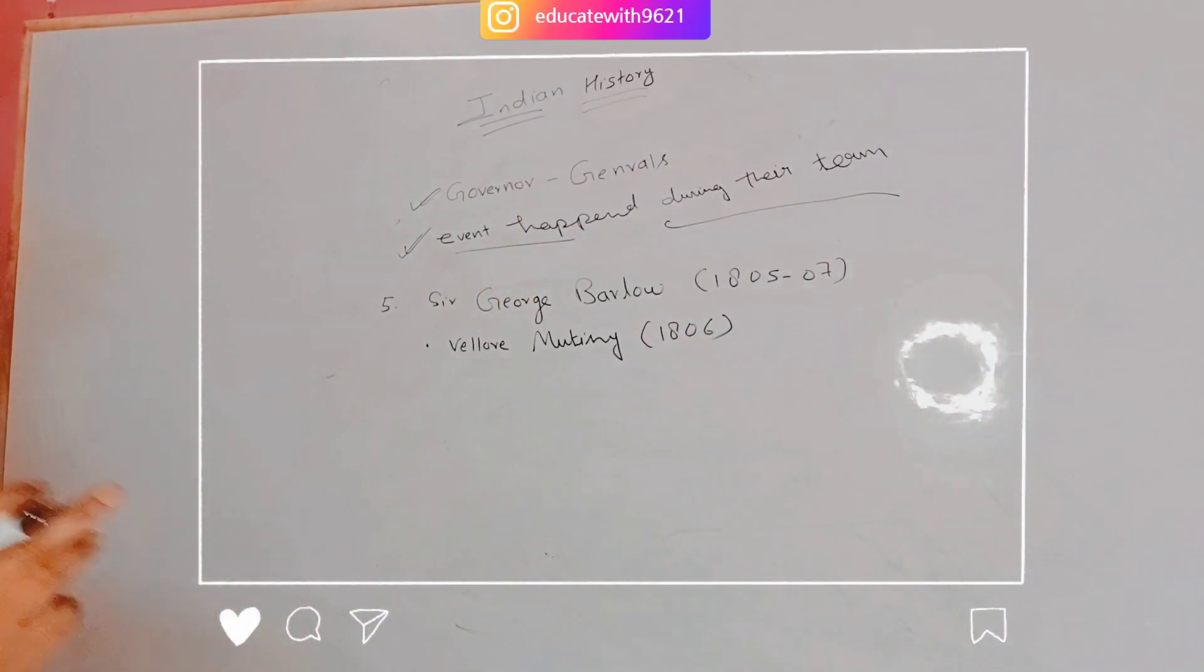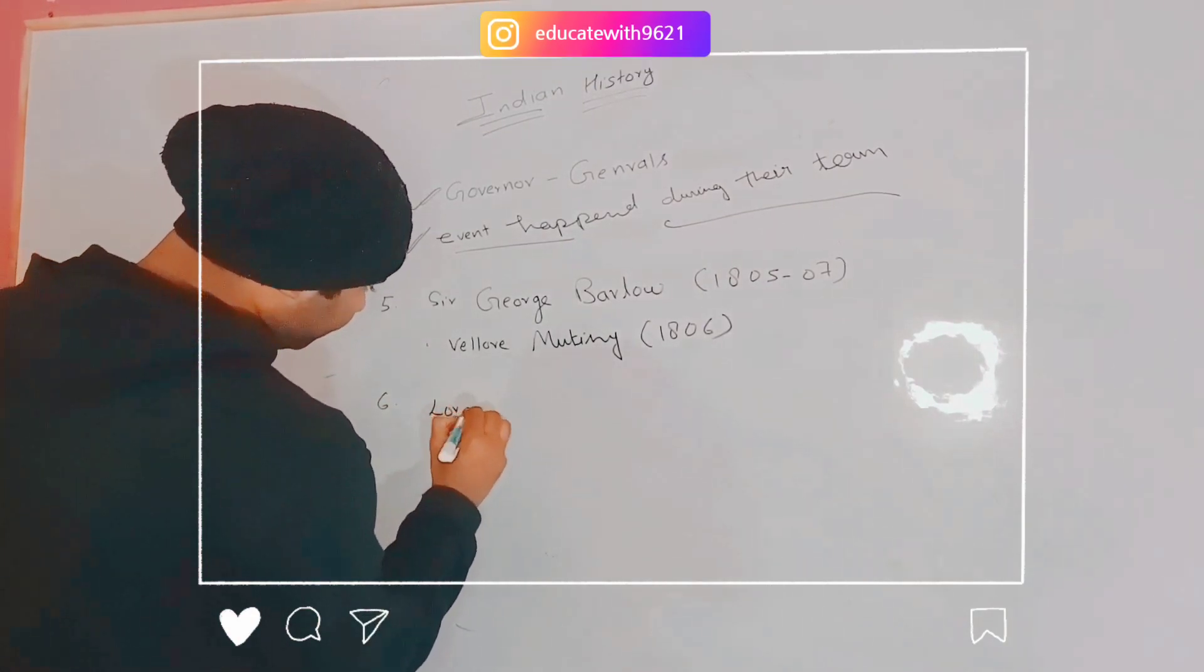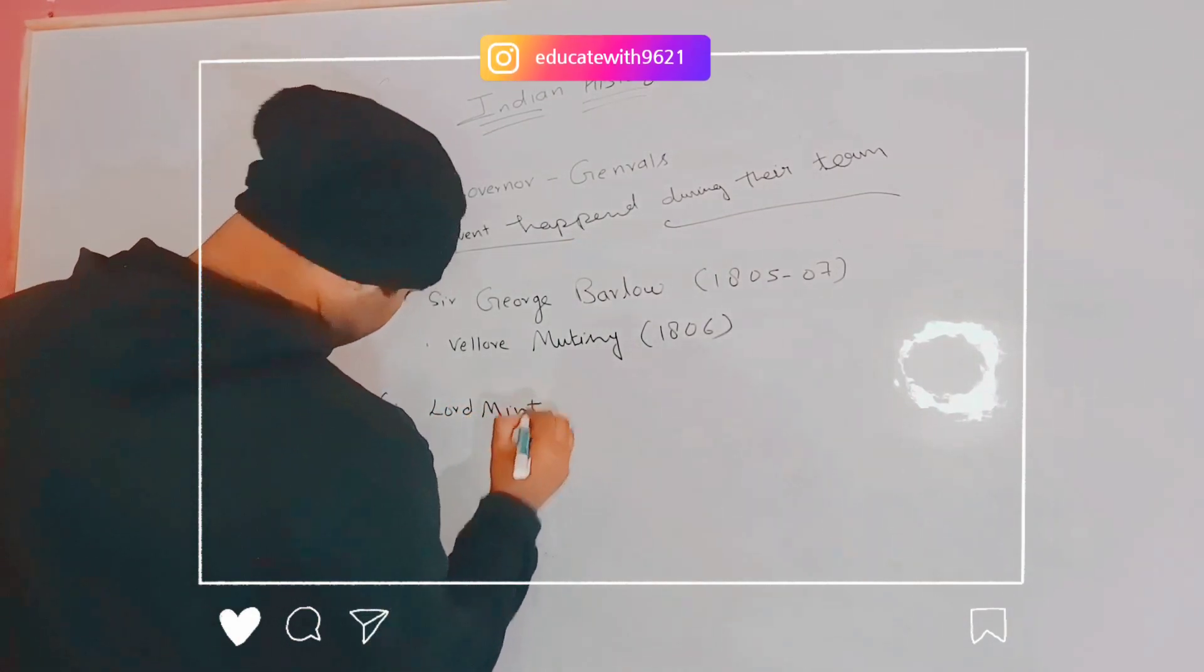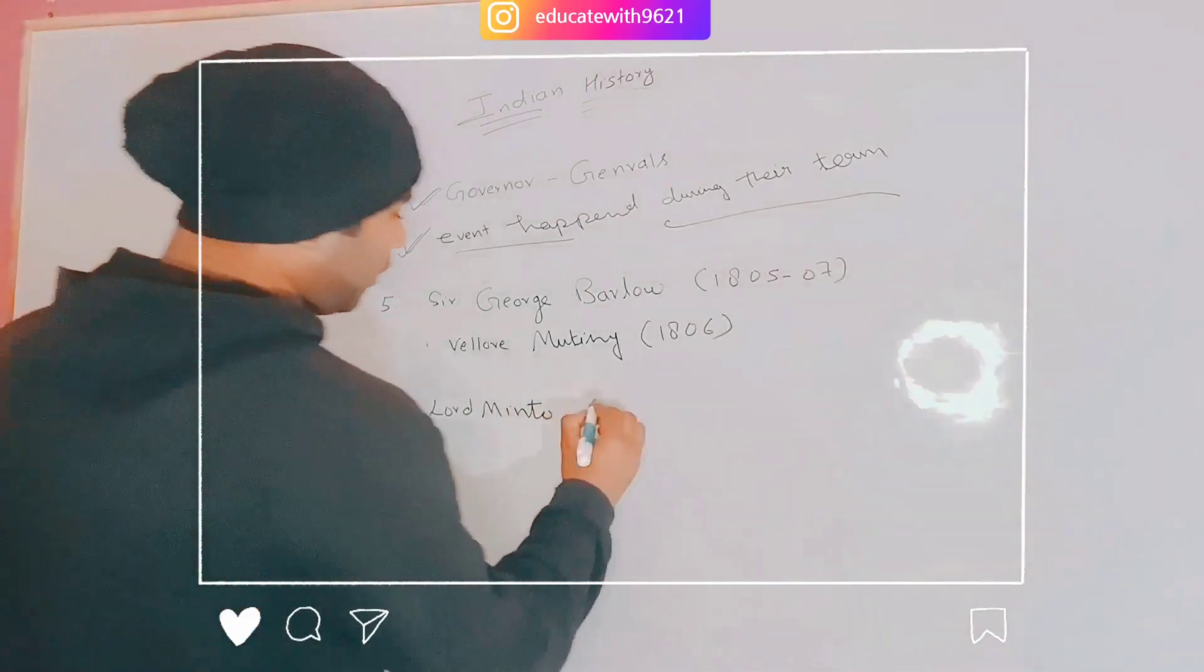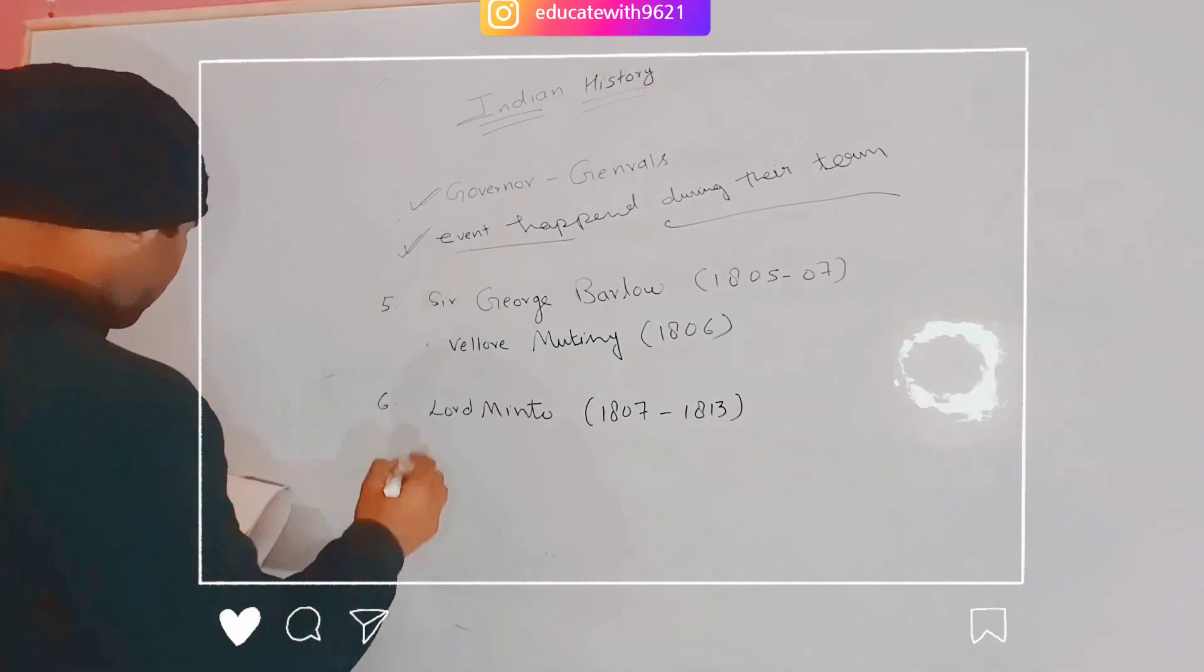Next is the sixth one, Lord Minto. Lord Minto's time period is 1807 to 1813. He was Lord Minto First because there is one more Minto.